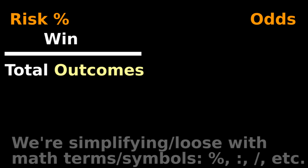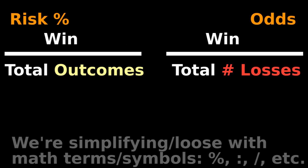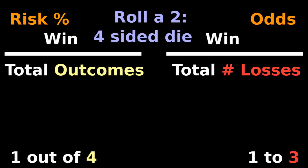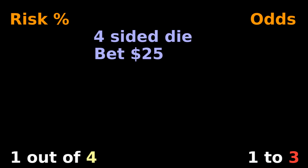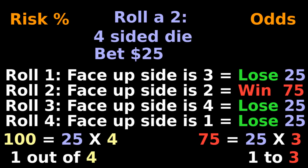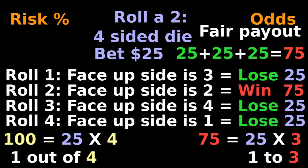What are the odds? Risk is wins divided by total possible outcomes. Odds are wins divided by total possible losses. With a four-sided die, the risk of rolling a two is one out of four, while the odds of rolling a two is one out of three. If you bet $25 that you'll roll a two, should you get $100 according to risk or $75 according to odds? Odds is the fair payout, where the losses equal wins.